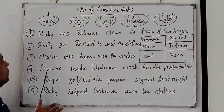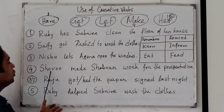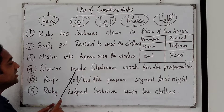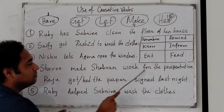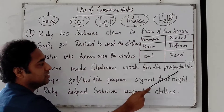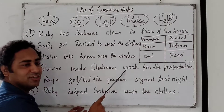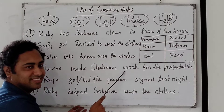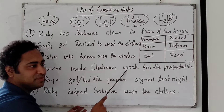Coming to the fourth one: make. 'Shogon made...' — not 'to,' only the base form of the verb.